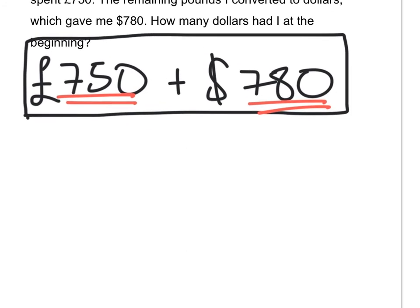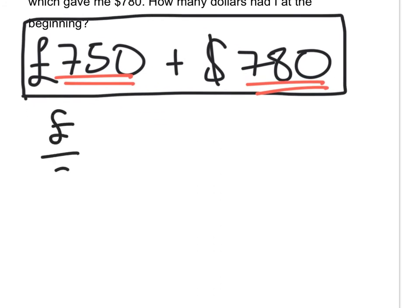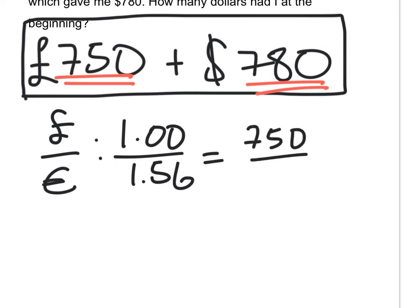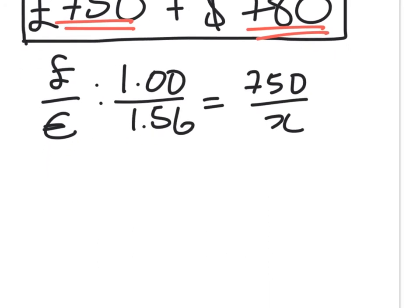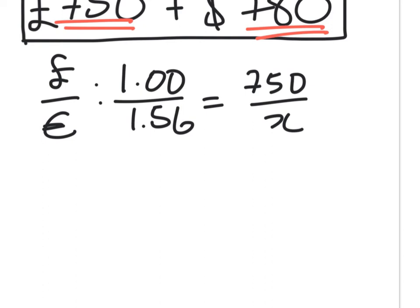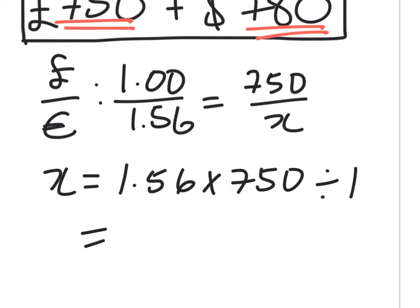So, what am I going to do? Use my proportions. So, pounds over dollars is one pound gets you $1.56. And I want to know, so, 750 pounds gets me how many dollars? Or is worth how many dollars? So, you do your cross multiplication. X equals 1.56 multiplied by 750 divided by 1. So, you do in your calculator 1.56 times 750. It's 1,170. So, 750 pounds turns into $1,170.